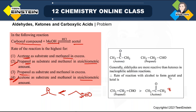Aldehydes are more reactive than ketones in nucleophilic addition reaction. That is why the rate of reaction with alcohol to form acetal favors the aldehyde. Based on that, you can cancel options 1 and 4. Among options 2 and 3, option 3 is correct because methanol is in excess. Read the question carefully — if it had mentioned hemiacetal instead of acetal, the correct option would be propanal with stoichiometric methanol, which would be option 2.